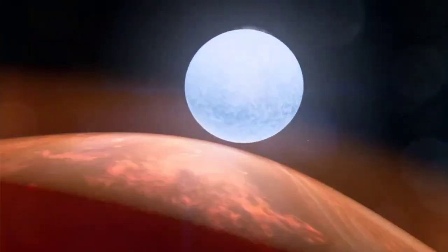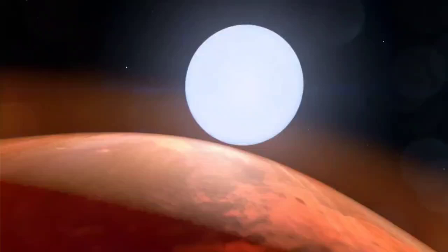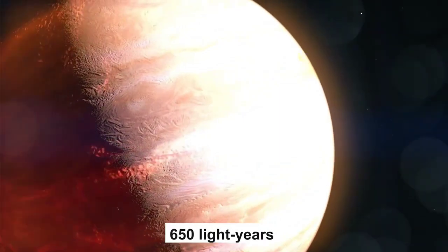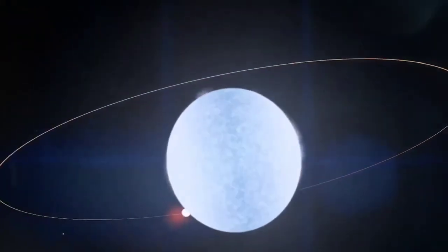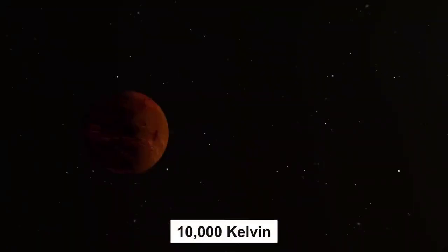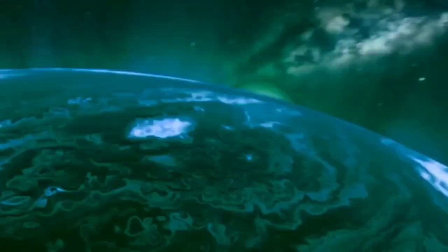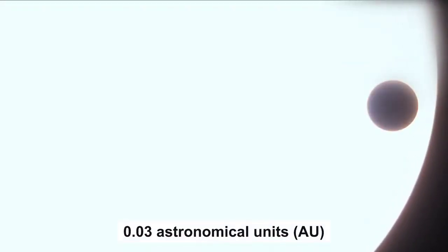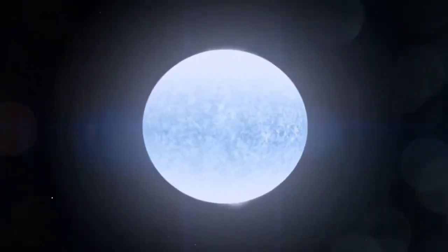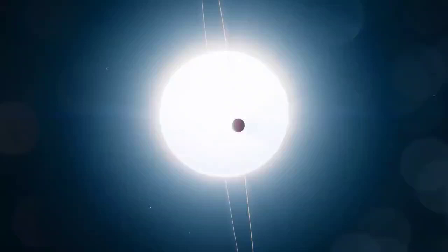The next exoplanet on my list is the extremely hot KELT-9b. KELT-9b is a 300-million-year-old gas giant exoplanet in the constellation Cygnus some 650 light years distant. It revolves around KELT-9, one of the hottest and brightest stars known to science, with temperatures exceeding 10,000 Kelvin. This gas giant is about three times the mass of Jupiter and orbits its star at a distance of only 0.03 astronomical units, equivalent to approximately 5 million kilometers. Its orbit is so close to its star that it completes one revolution in approximately one and a half Earth days.